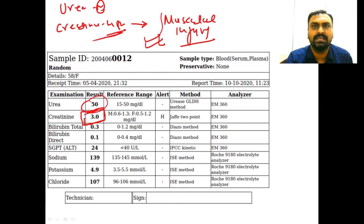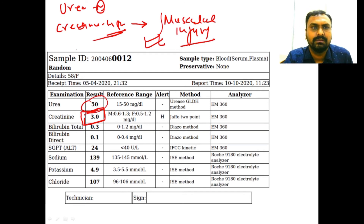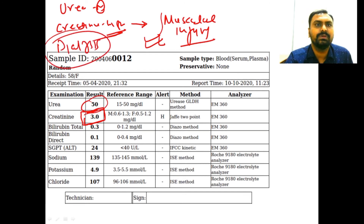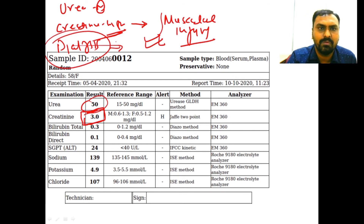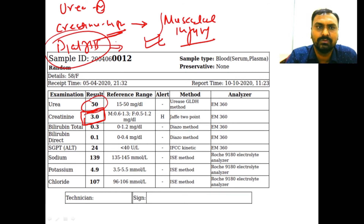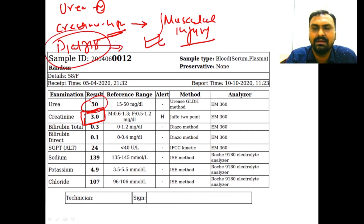This pattern might represent a case of dialysis. After dialysis, urea is removed and returns to normal. Creatinine also returns to normal but it takes a while — so after dialysis, urea level will be normal but creatinine still remains high.